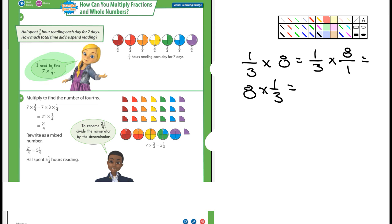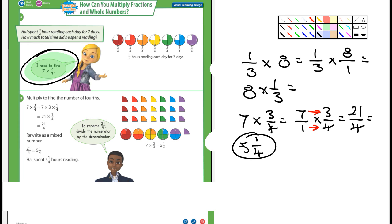All right, so this very first one here says I need to find 7 times 3/4. So you guys should know by now, you just simply take the 7, turn it into a fraction, and then go ahead and multiply it by 3/4. Then you should remember you just multiply straight across. 7 times 3 is 21, 1 times 4 is 4. Then you ask yourself, how many times does 4 go into 21? It goes in 5 times. There's 1 left over, so the answer would be 5 and 1/4.